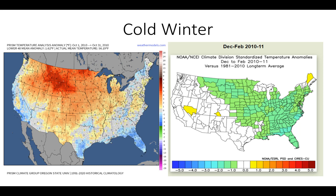I'm going to look at four colder than normal winters and four warmer than normal winters across the eastern U.S. On the left of each slide, October temperatures for the particular year: orange or yellow shading indicates above normal temperatures — the brighter the orange, the more above normal. Blue indicates below normal temperatures, and gray is near normal. On the right of each slide, a graphic for the December-to-February winter season: green or blue is below normal, and yellow, orange, and red is above normal.